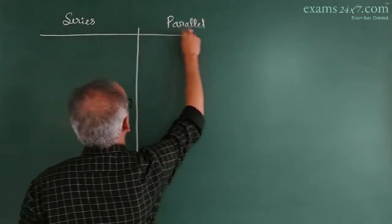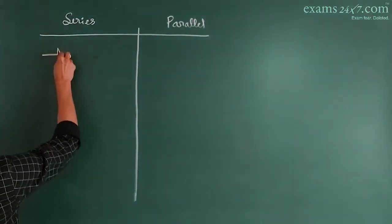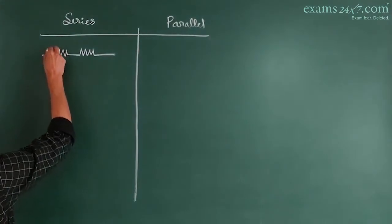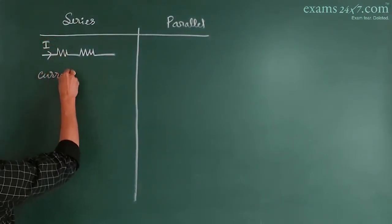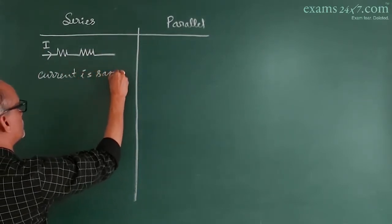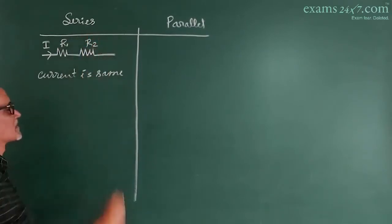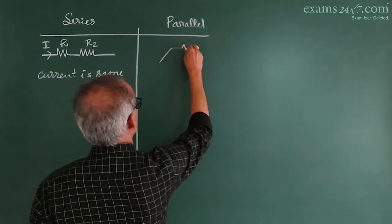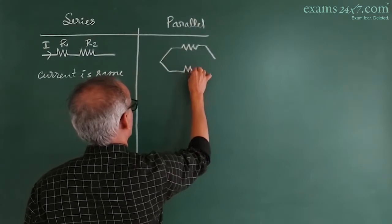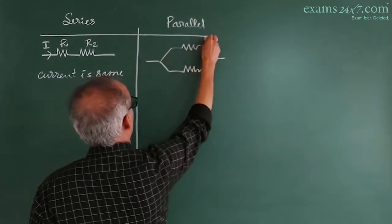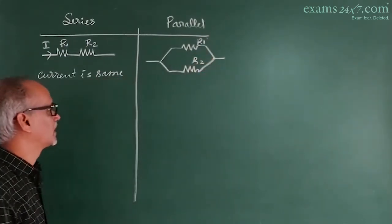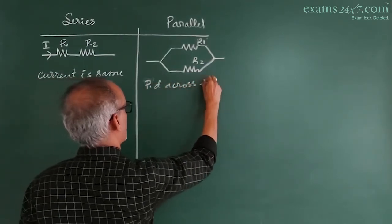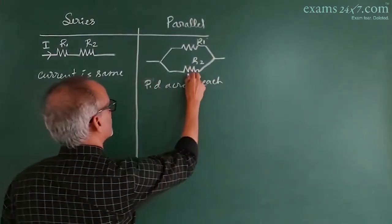One of the important topics in electricity is the combination of resistances — series combination and parallel combination. When resistors are connected end to end such that the current through each resistor is the same, they are in series. In parallel combination, the resistors are connected between the same two points, R1 and R2, such that the potential difference across each resistor is the same, which we take as V.